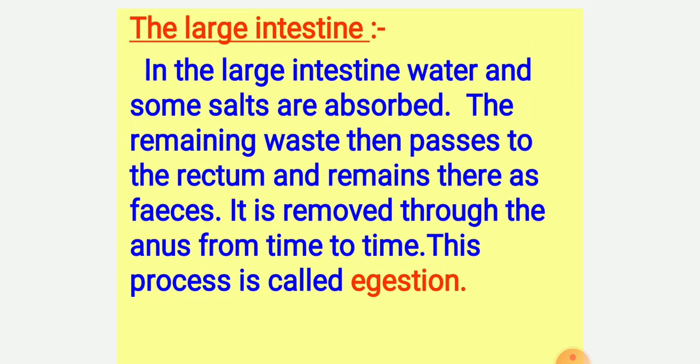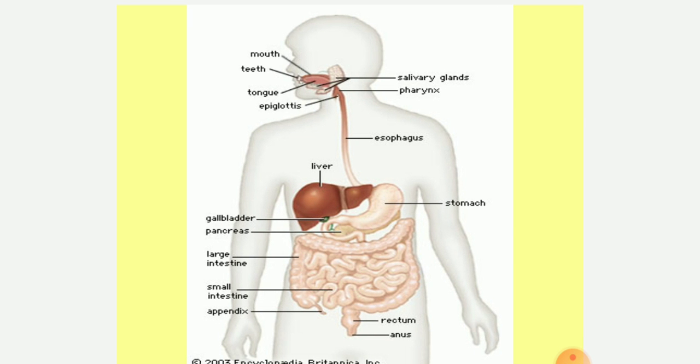Due to this, the undigested food becomes dry and almost semi-solid. This is known as feces which is then stored in the rectum. Feces is removed from the body through the anus. This is called egestion.